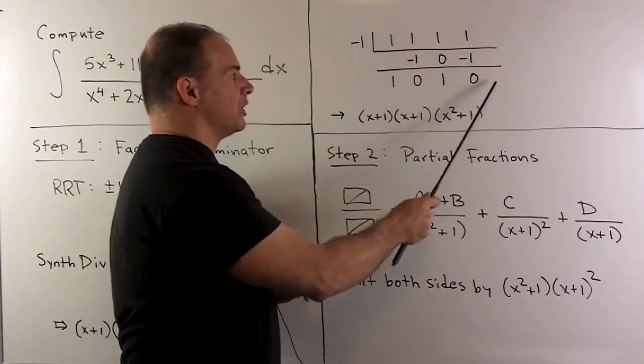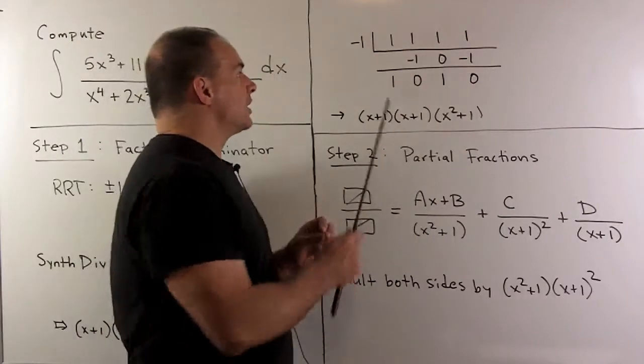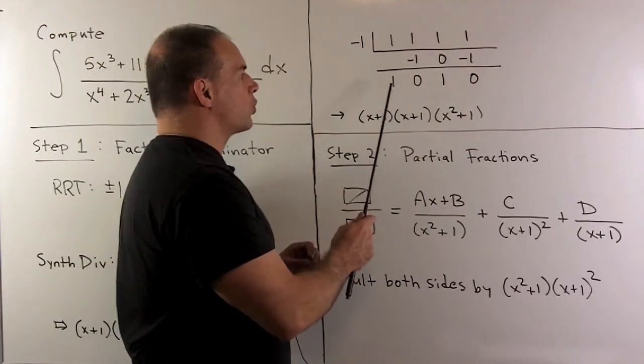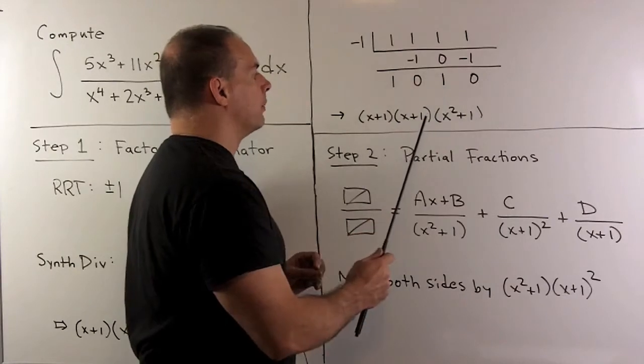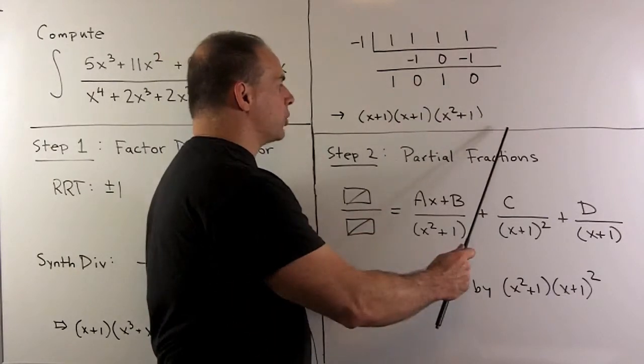Again, the remainder is 0, so it divides evenly. That gives us x plus 1 times x squared plus 0x plus 1. So here's our complete factorization.